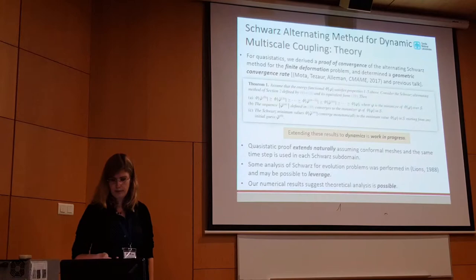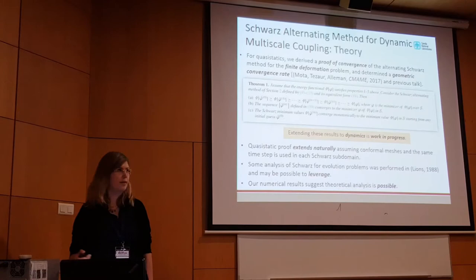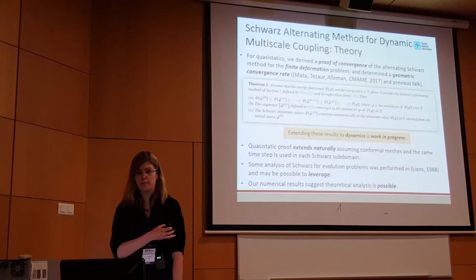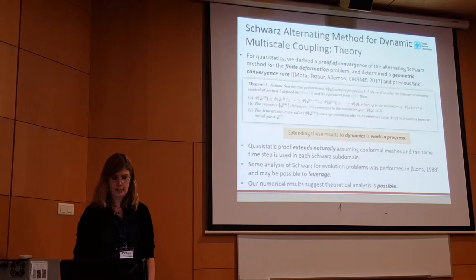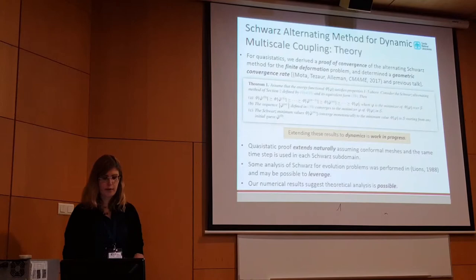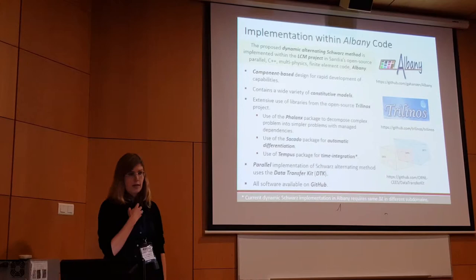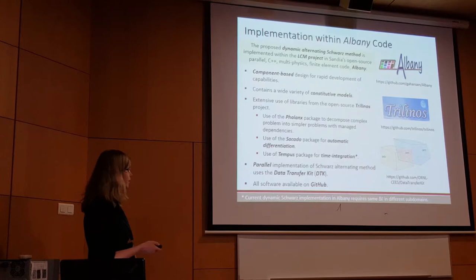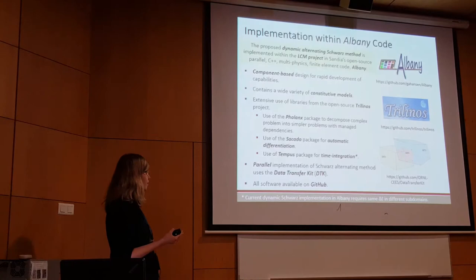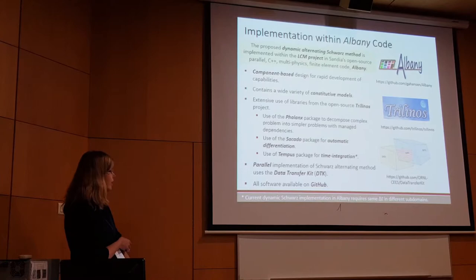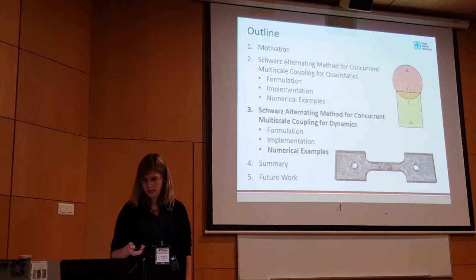In terms of theory for dynamics, the quasi-static proof actually extends naturally to dynamics if you use the same time-step and conformal meshes in each subdomain — though that's not the interesting case. We are looking at extending the theory to the more general case currently. The numerical results strongly suggest there is a solid theory underlying this: we get very good results with no observable artifacts. The dynamic implementation uses the same Albany code with a new Trilinos package called Tempus for time integration, using Newmark-type steppers. Currently the implementation requires the same time-step in each subdomain, but we'll change that soon.